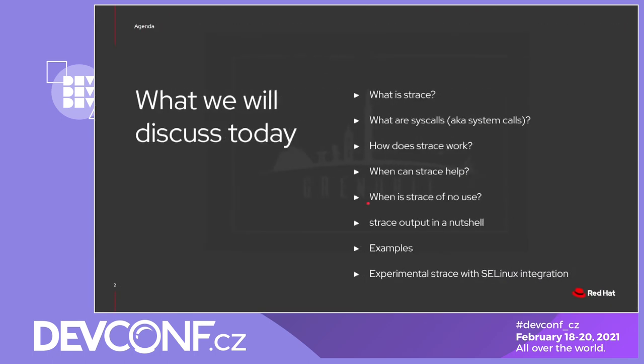Let's go to the agenda. First, I will briefly introduce strace and the options I like to use. Then go through some very limited technical details which are really necessary to understand. I assume here that you have some knowledge of system programming in C or Python programming. I will then tell you when strace may be of some help, depending on the problem to troubleshoot. I will go through some strace output analysis, and finally present six examples of strace usage.